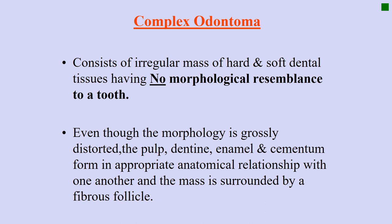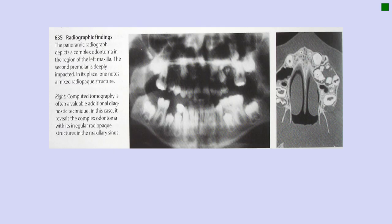Complex odontome, on the other hand, consists of an irregular mass of hard and soft dental tissues having no morphological resemblance to a tooth. They contain normal tooth-like structures - enamel, dentine, and pulp - but the arrangement is not in the shape of a tooth. Even though the morphology is grossly distorted, the pulp, dentine, enamel, and cementum form in appropriate anatomical relationships with one another, and the mass is surrounded by a fibrous follicle. Looking at this case, a panoramic radiograph depicts the complex odontome in the left maxilla with the second premolar deeply impacted and a mixed radiopaque structure noted.